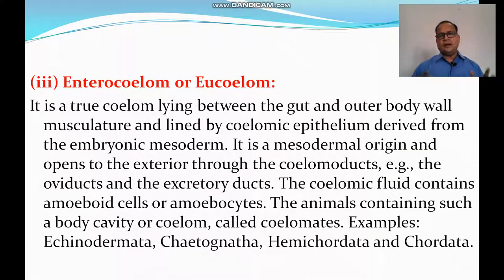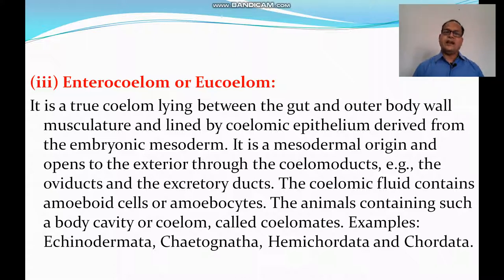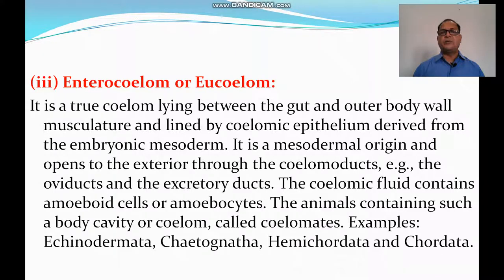True Coelom or Eucoelom. It is a true coelom lying between the gut and outer body wall musculature, lined by coelomic epithelium derived from the embryonic mesoderm. It is of mesodermal origin and opens to the exterior through the coeloducts, for example oviducts or excretory ducts. The coelomic fluid contains amoeboid cells or amoebocytes. Animals containing such a body cavity are called coelomates, true coelomates, eucoelmates, or enterocoelomates.